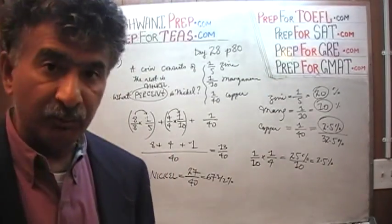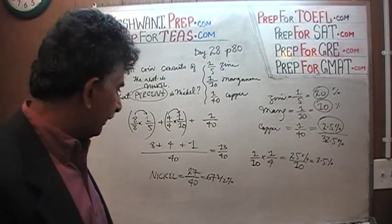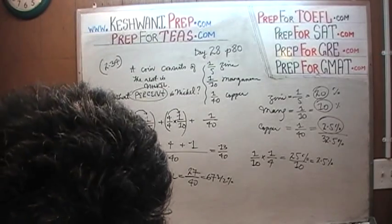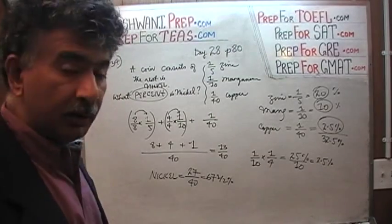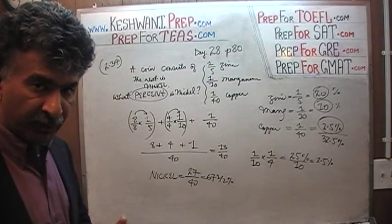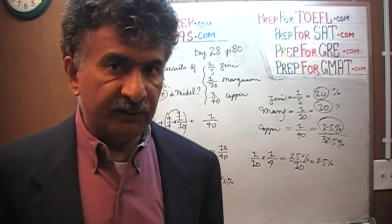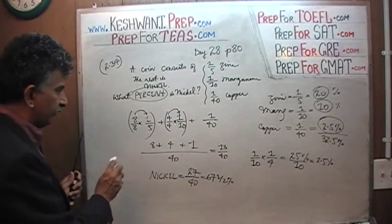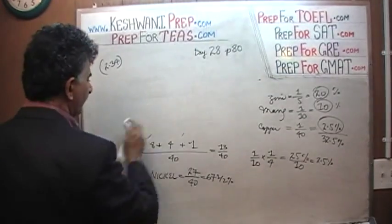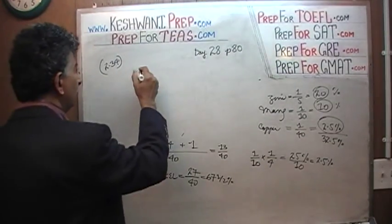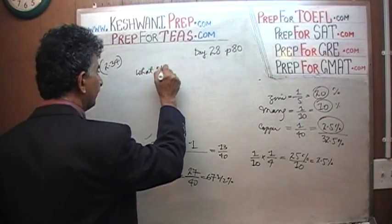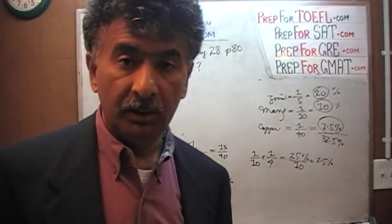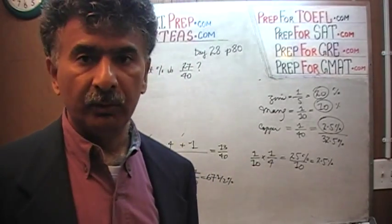That's one method — and we are not quite done yet. Now I'm going to show you a second method. We are done with the coin problem. The next question is: in the exam, they give you questions where you have to convert fractions into decimals, decimals into fractions, fractions into percentages — all sorts of things. So here is the new question: what percent is 27 over 40? Express that in percentage. How would we go about doing it? Listen carefully.